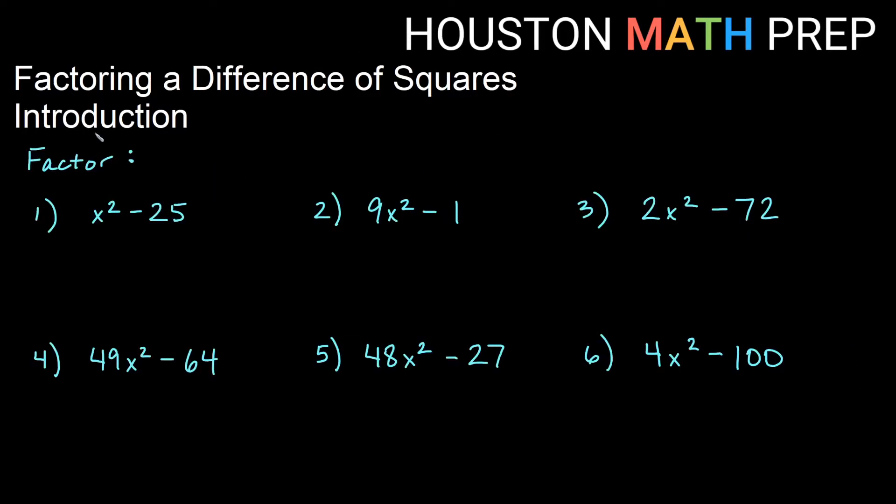Looking at several more here, I have a perfect square here. This is x times x, and a perfect square here. This is 5 times 5, with subtract in the middle. So in other words, I have x² minus 5². So I will have conjugate factors with x and 5, x plus 5, and x minus 5 as our answer for how to factor difference of squares x² minus 25.